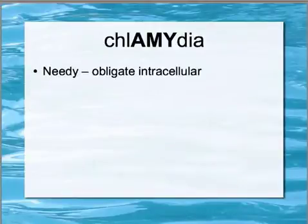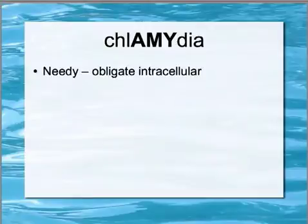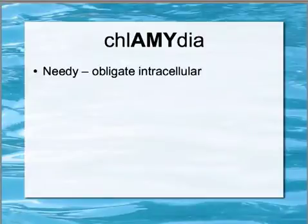Chlamydia — I like to remember it as the girl's name Amy, which is in Chlamydia. This helps me remember some more things about the organism, mainly that she is needy. She's an obligate intracellular organism who can't make her own ATP.